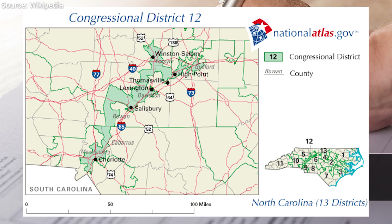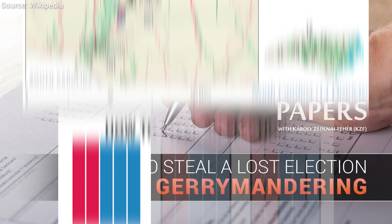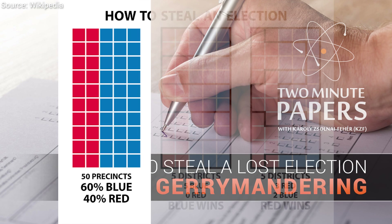If we try to understand why it has this peculiar shape, we shall find a remarkable mathematical mischief. Have a look at this example of 50 electoral precincts. The distribution is 60% blue and 40% red, so the blue party should win the elections and gain seats with a ratio of 60 to 40. Right?